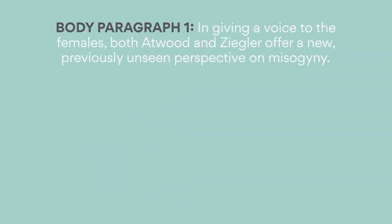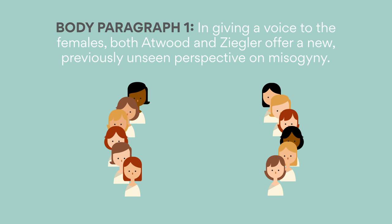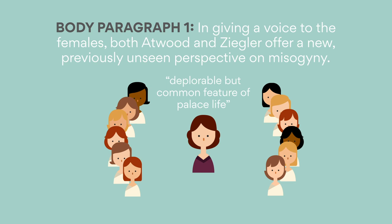In the Odyssey, the maids are constructed as unfaithful and disrespectful of Queen Penelope, Telemachus, and other staff. Their own story is silenced and instead observed through others. Whereas in the Penelopiad, the maids tell their own version of events, meaning that their actions were under Penelope's instruction. The patriarchal rule is accentuated through their lack of status and rape, which is considered a deplorable but common feature of palace life. Moreover, we feel sympathy for these three-dimensional characters as they toil and slave and hoist their skirts at men's command.